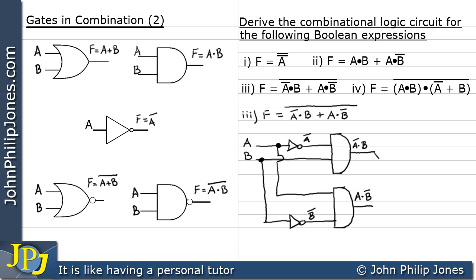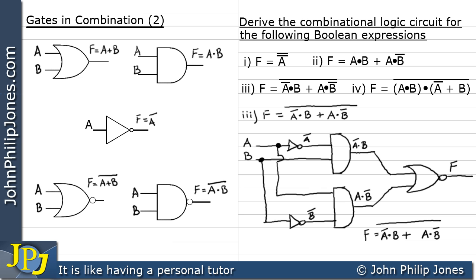Now I need to OR the two results together, but my OR gate has a NOT straight across the top, which implies a NOR gate. So the output F is taken from a NOR gate whose inputs are NOT A AND B and A AND NOT B. The NOR gate ORs the two inputs and then NOTs the result, which is exactly what this Boolean expression requires.